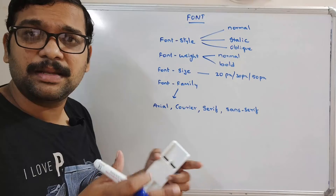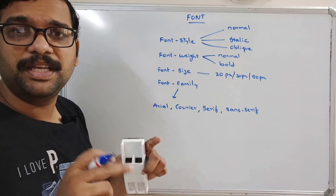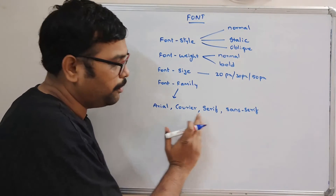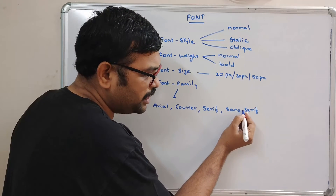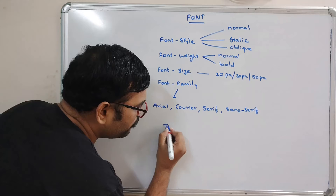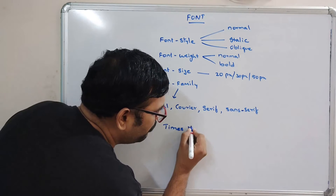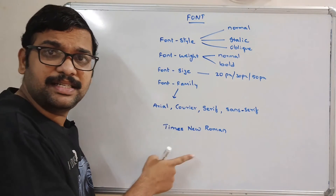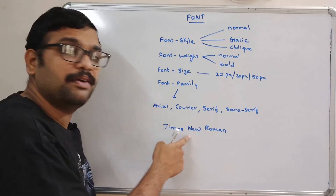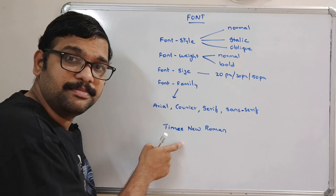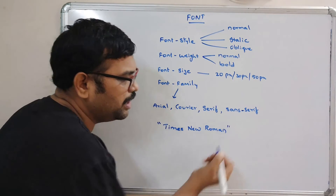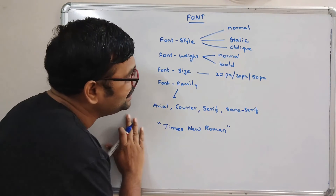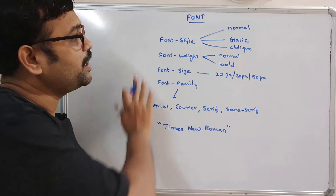One important rule: if our font name consists of multiple words with a space separator, such names should be given in double quotes. For example, Arial is a single word — no problem. But Times New Roman has three words separated by spaces, so it must be enclosed in double quotes.